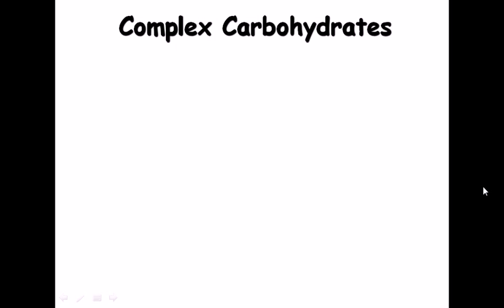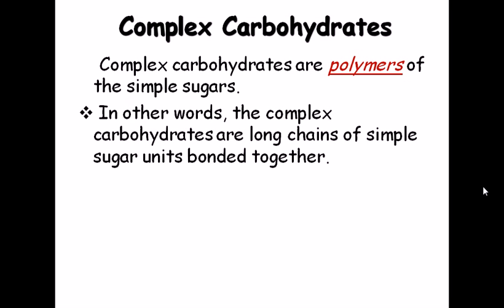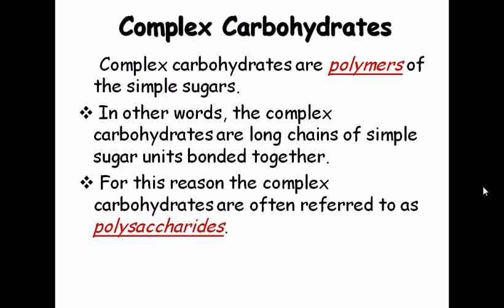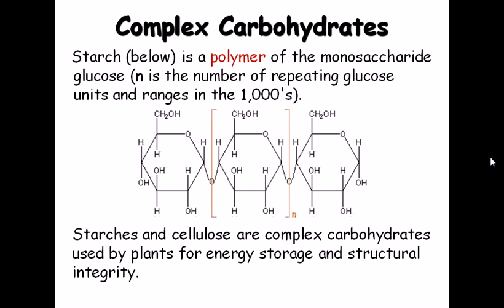Complex carbohydrates are polymers of simple sugars like monosaccharides and disaccharides — in other words, they are long chains of simple sugar units. That is why complex carbohydrates are often referred to as polysaccharides. For example, starch is a polymer of the monosaccharide glucose, where glucose is repeated n times — possibly thousands of times — linked via glycosidic linkages to form this extremely complex molecule used for storing sugar for future use.